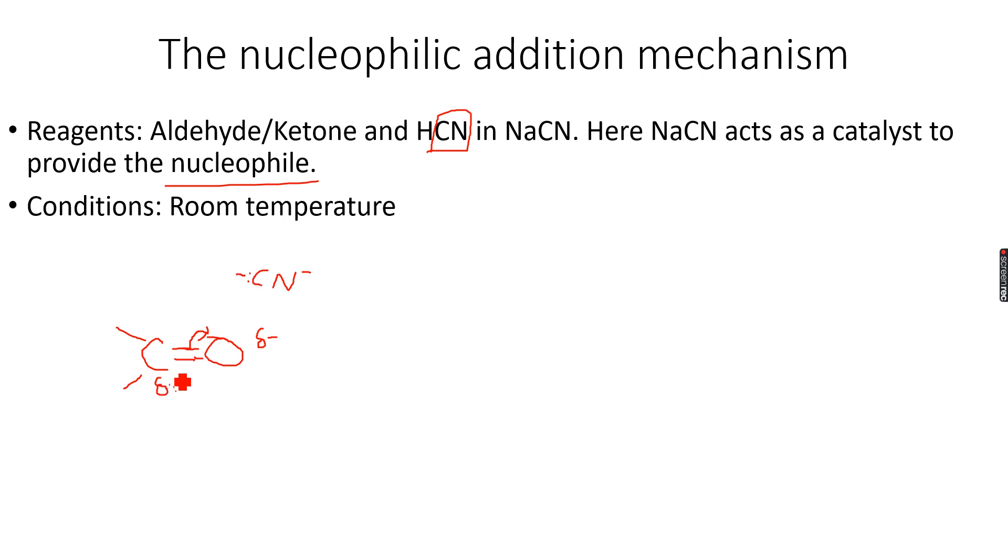Now what happens is that because the carbon has a partial positive charge, it can accept electrons. So this nitrile group attacks this carbon atom, and we get something like this.